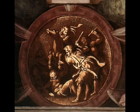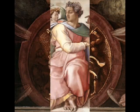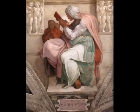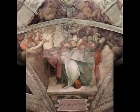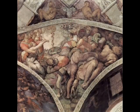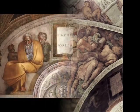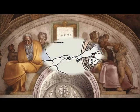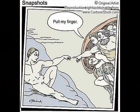The medallions are located between the central narratives. The prophets and sibyls are arranged on the sides of the walls. There are four pendentives, one in each corner of the chapel. Finally, there are eight webs along the walls that depict the ancestors of Christ.